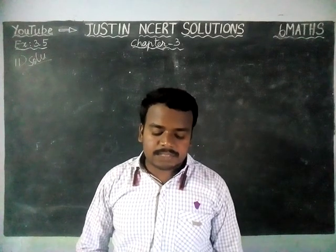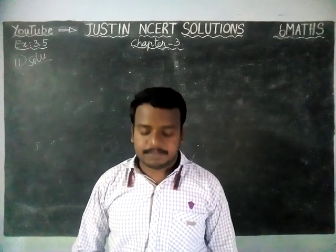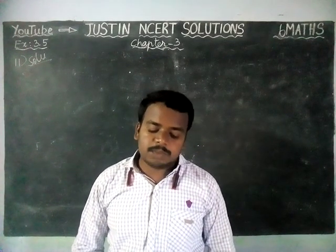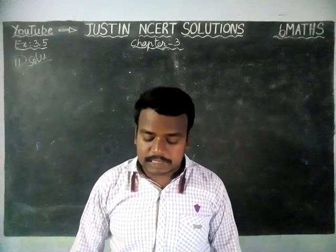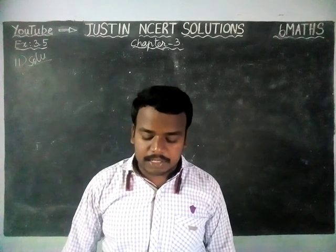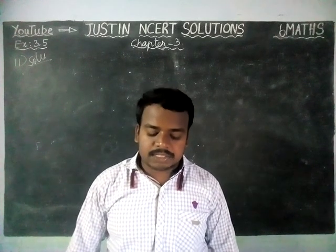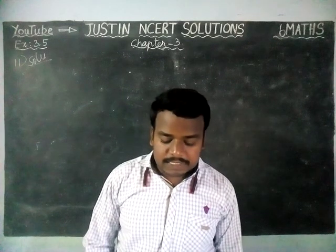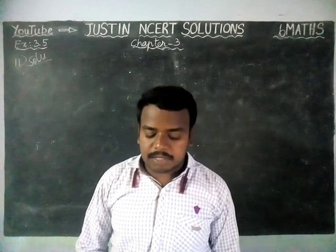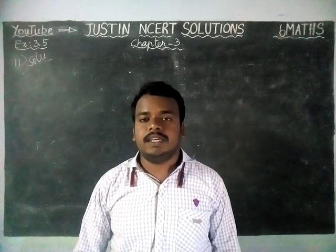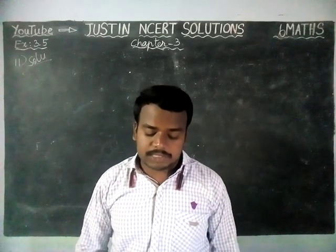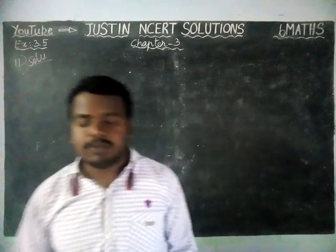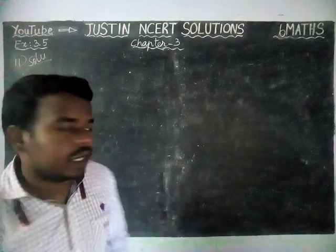The question is: 18 is divisible by both 2 and 3. It is also divisible by 2 × 3 = 6. Similarly, a number is divisible by both 4 and 6. Can we say that the number must also be divisible by 4 × 6 = 24? If not, give an example to justify your answer.